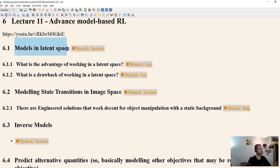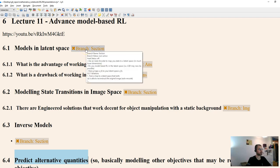So what we'll be covering is models in latent space, modeling the state transitions in image space directly, inverse models, and then predicting alternative quantities, kind of an engineered approach. So let's start with latent space modeling.